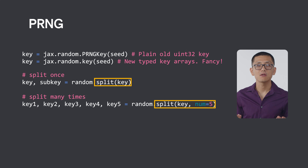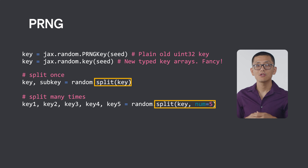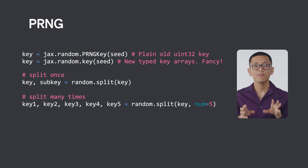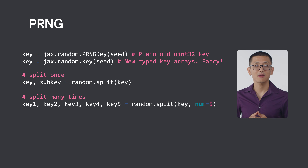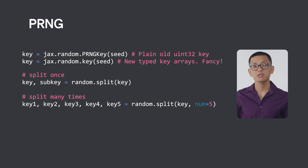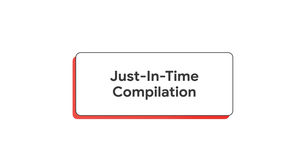The general rule of thumb here is to never reuse keys unless you are trying to generate identical outputs. This explicit management guarantees reproducibility and parallelizability, crucial for reliable scientific computing and large-scale machine learning research. Okay, home stretch — just one more JAX idea for you to digest.